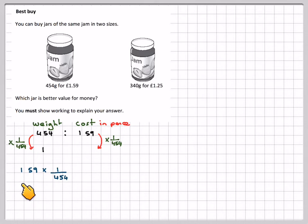So I'm going to need to work out 159 times 1 over 454, which is 159 over 454, which is 0.35 of a pence.